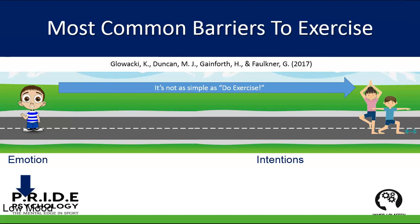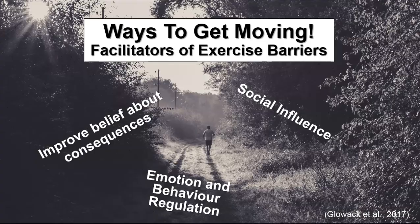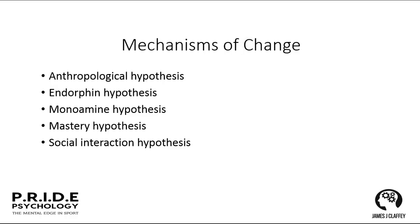Looking at emotions and attention — starting from low mood, we move along to situation and personal skills, then intentions and level of motivation, and then levels of confidence. Ways to get moving and facilitators of exercise versus barriers: improve beliefs about consequences by giving information, emotional and behavioural regulation, and social influence — are the people around them facilitative or debilitating? Mechanisms of change include the anthropological hypothesis, the endorphin hypothesis, the monoamine hypothesis, the mastery hypothesis, and the social interaction hypothesis.